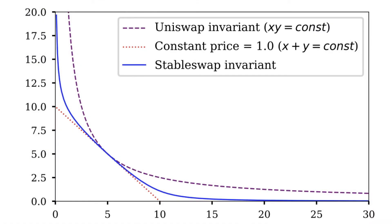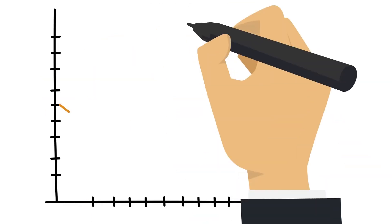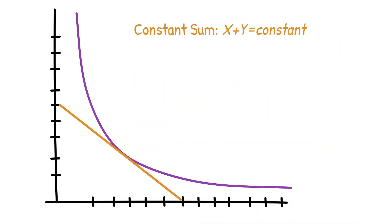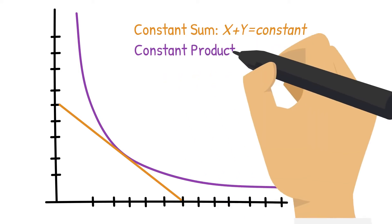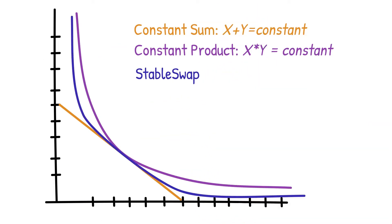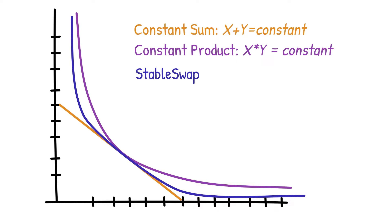This is the classic chart that shows the bonding curves used by three separate types of liquidity pools. The first curve is actually a straight line — it represents the constant sum formula. The second curve is the most common curve, the constant product formula, first introduced by Uniswap. This third blue line represents StableSwap. The magic of the StableSwap bonding curve lies in that flat middle section where it resembles the constant sum formula.